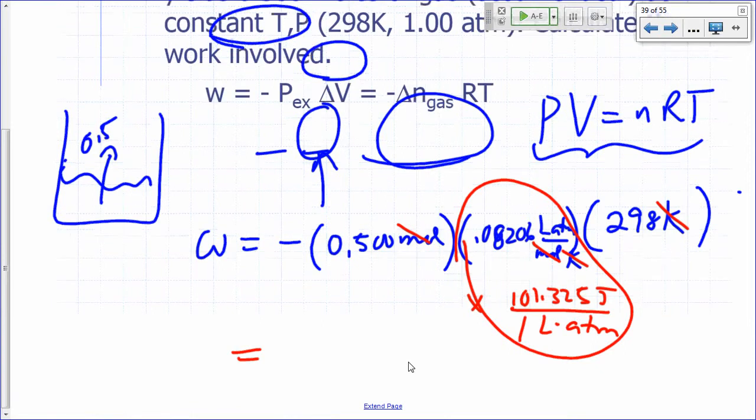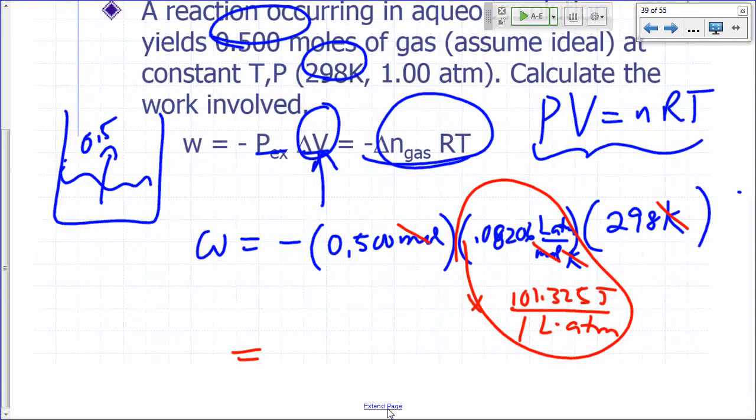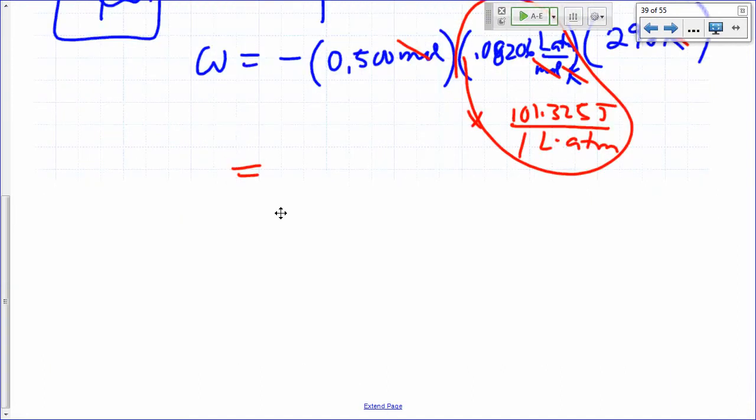So a more convenient unit for R, a convenient number to use for R, would be to use 8.314. So we can say this is negative 0.500 moles times R, which is 8.314. If you want your answer in joules, might as well use this value for R.